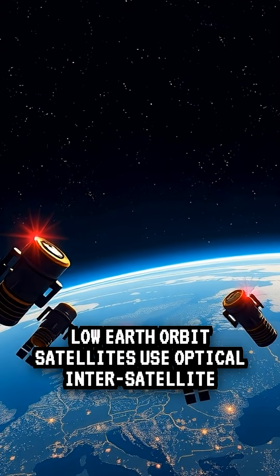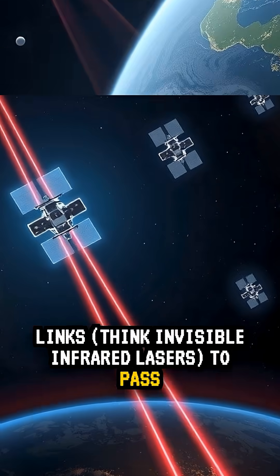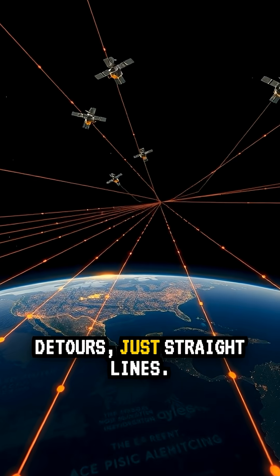Low-Earth orbit satellites use optical inter-satellite links—think invisible infrared lasers—to pass data from craft to craft. No towers, no ocean detours, just straight lines.